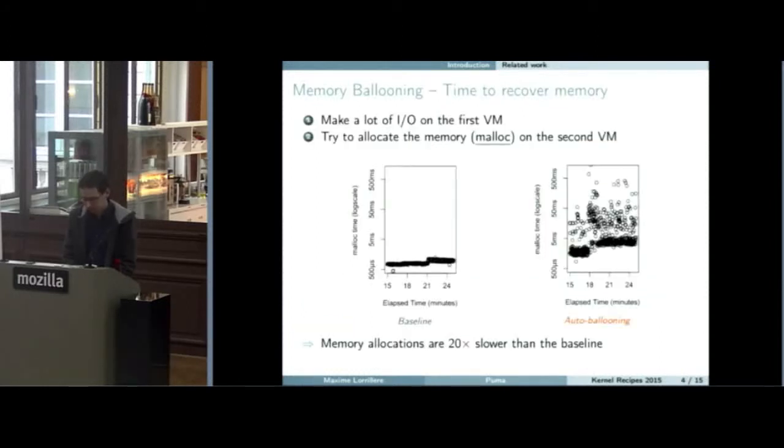To illustrate this, we made a simple experiment with KVM and an automatic ballooning patch. The basic idea of this experiment is to make a lot of I/O on the first VM so that the balloon will decrease and thus take the memory of the other VM. On the other VM, after that, we make memory allocations. When we do the memory allocations, we will need more memory. So we want to get back our memory. But since it is very difficult for the hypervisor to know that all the memory he had taken was for cache, he will give swap to the VM.